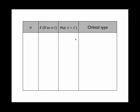So let's go through a few examples. If N equals 1, the only value of L that's allowed is 0 because N minus 1 is 0. And so the only value of M sub L is also 0. The type of orbital that these quantum numbers describe is the 1s orbital, 1 for the principal quantum number N equals 1.